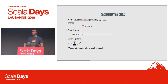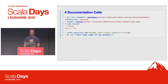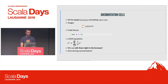Documentation cells are just markdown. We have all the usual markdown formatting options — we can include images, code fences, LaTeX equations. The cool thing is that we can edit them right in the browser. So if I double-click on this, it will change to an editor window, and I can write something here. When I hit Control-Enter again, this will be updated and we get the rendered view.